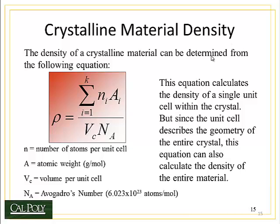Let's go back to density. Is it possible to figure out the density of a material from the unit cell? The answer is yes, by using this equation: the density equals the sum over all atom types from the first to the kth atom of N_i — the number of atoms per unit cell for atom type i — times A_i, the atomic mass of that atom type, divided by V_C, the volume of the unit cell, times Avogadro's number, which is 6.022 × 10²³ atoms per mole. If I plug in these numbers, I should get a density very similar to what I get in real life. We'll practice this.